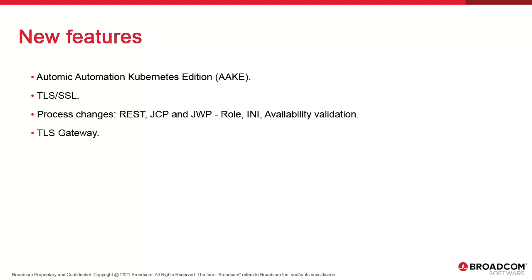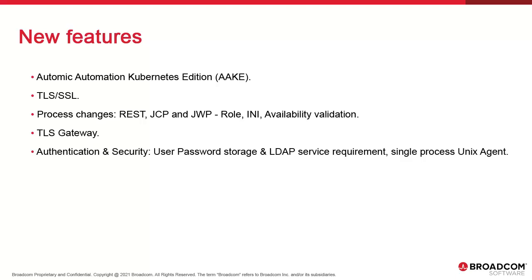JWP takes on several new roles — we'll see the impacts on configuration and AWI access. TLS Gateway is a new component that provides translation services between TLS-SSL and non-TLS agents, with a focus on file transfer processes. User passwords are now stored as hashes for improved security. When you upgrade to version 21, existing passwords are migrated automatically. The LDAP service has to be active to log in through LDAP, and the UNIX agent is now a single process. We'll explore improvements to the REST API, the Action Builder function has been enhanced, and passwords are now encrypted in Infrastructure Manager.